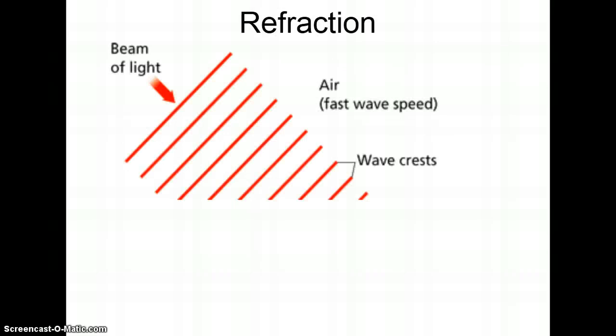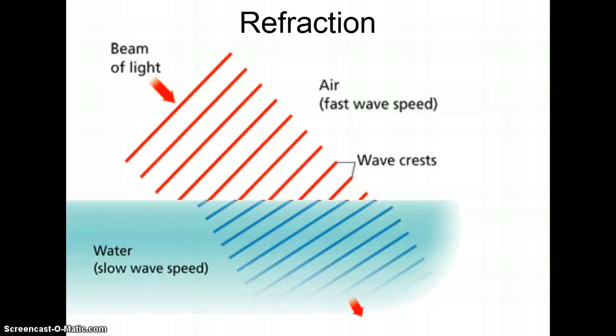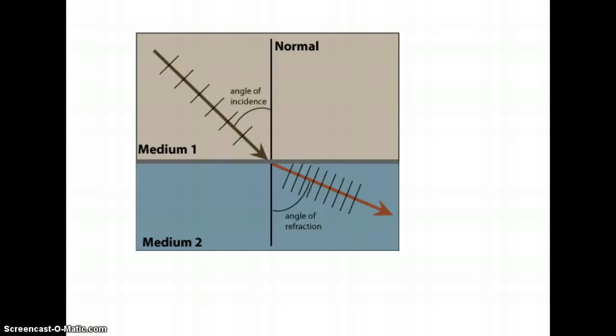Here you can see the beams of light in red moving very fast through the air, and as they hit the water you can see the bending that occurs. There's another picture. You see as it hits medium two, it bends due to the speed of the waves. This is called refraction.